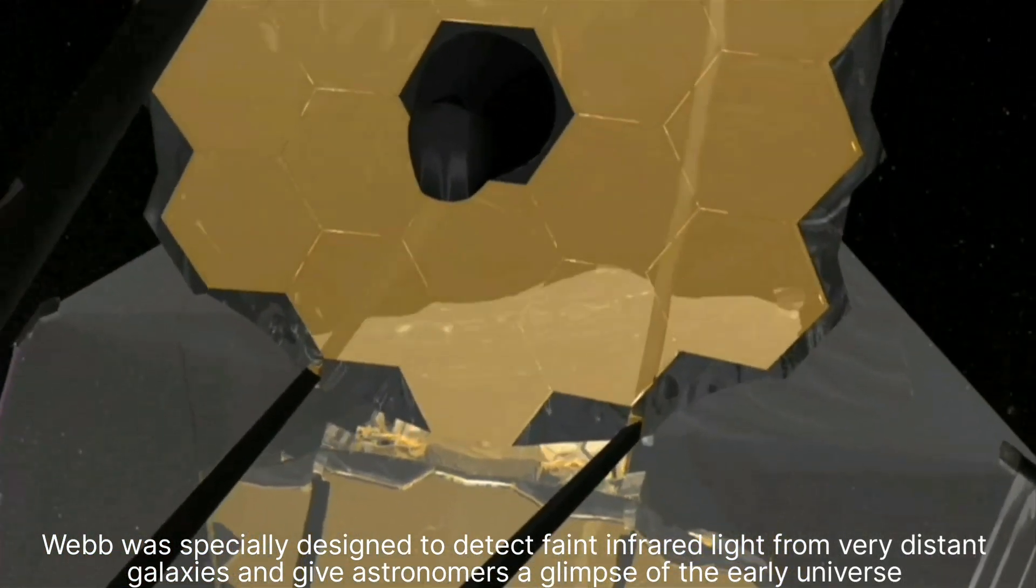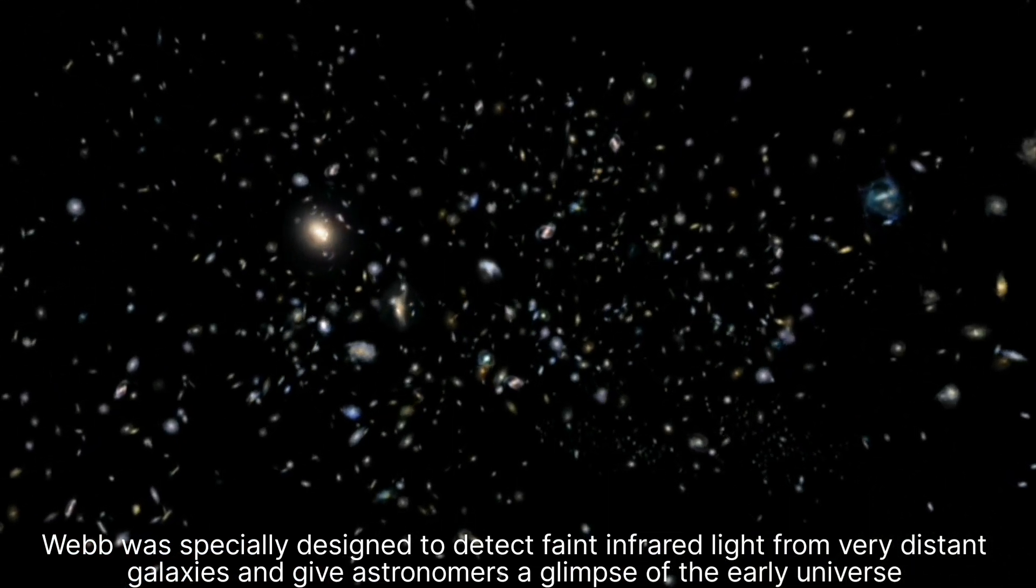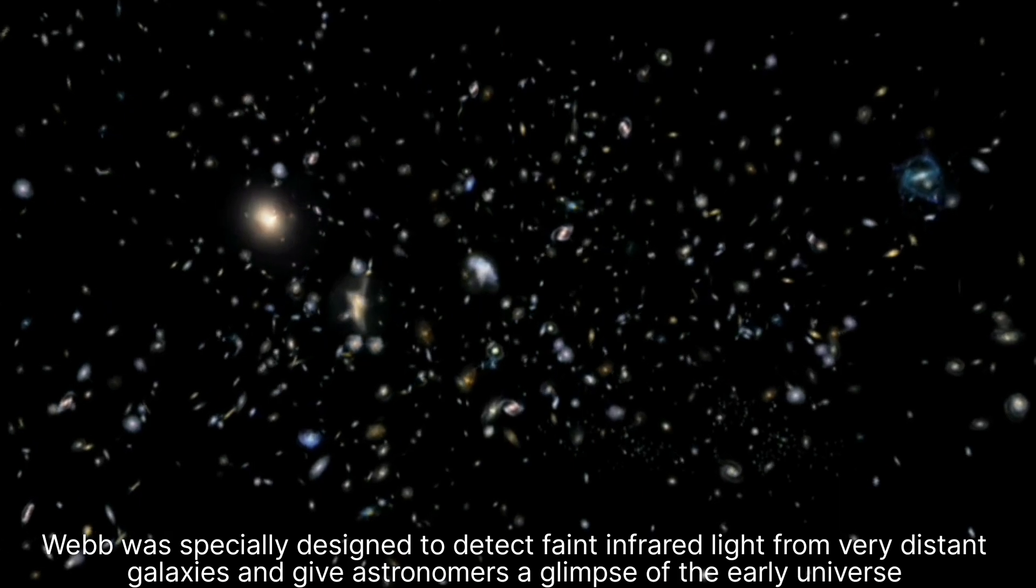Webb was specially designed to detect the faint infrared light from very distant galaxies and give astronomers a glimpse at the early universe.